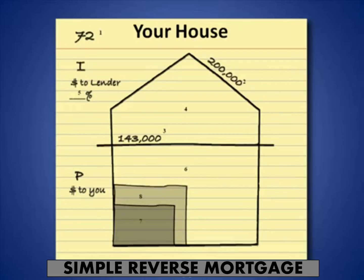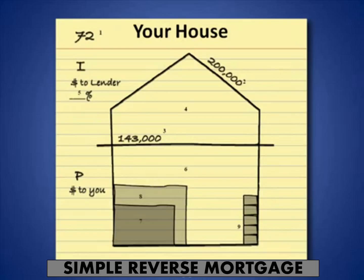Item eight would be all of your debts against your current home — for example, a $50,000 line of credit that needs to be paid off. That's coming out of item six. Item nine, lower right-hand corner, covers payments you would take: monthly installments, or a credit line where you take chunks of money periodically. You can take it all at once, take monthly payments, or access it whenever you need it.